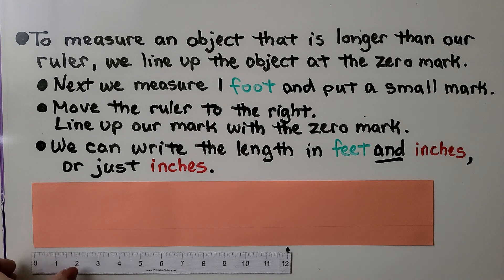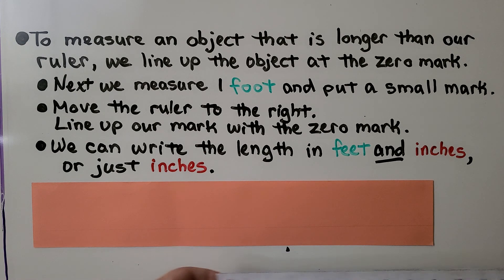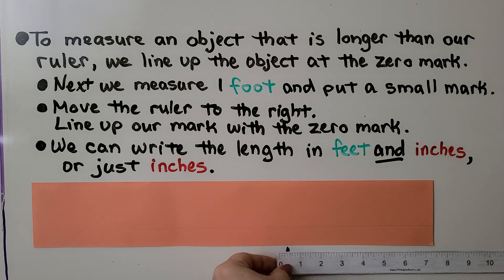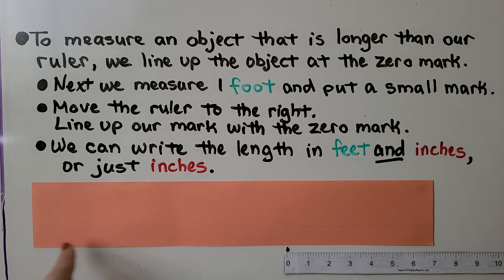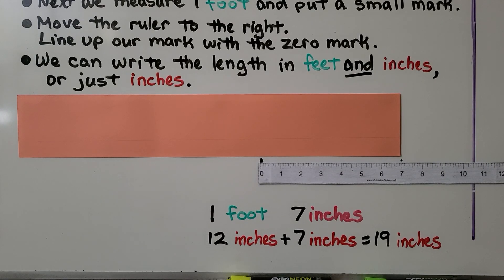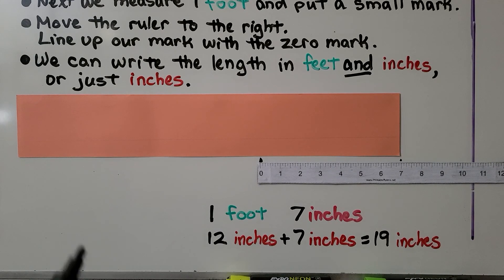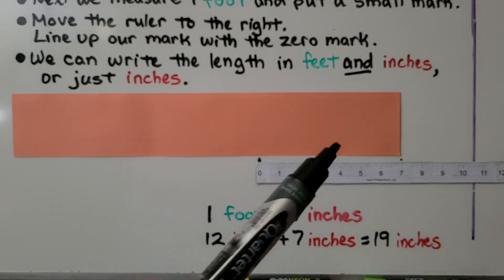Now we move the ruler to the right and line up that mark with the zero mark again. So we know that's one foot, that's 12 inches. And we've got seven more inches. We can write the length in feet and inches: it's one foot, seven inches.